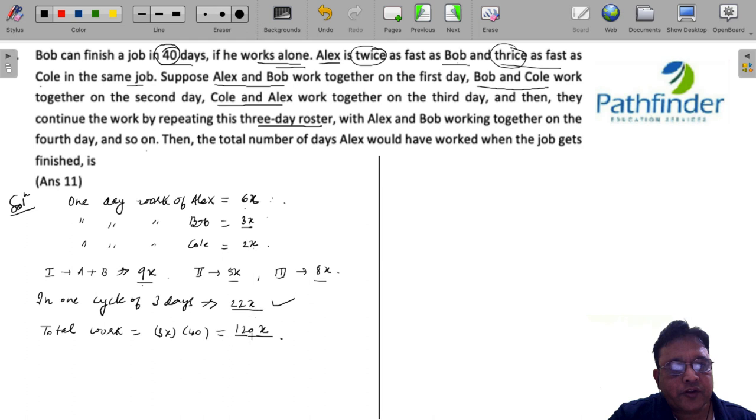Now, they have to finish 120x. So in five cycles, that is, in 15 days, you recognize that the total amount of work done will be work done in one cycle, 22x, multiplied by 5, that is 110x. This will be the work done by them in five cycles.